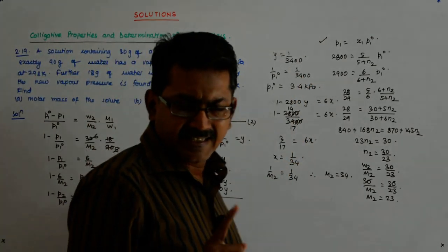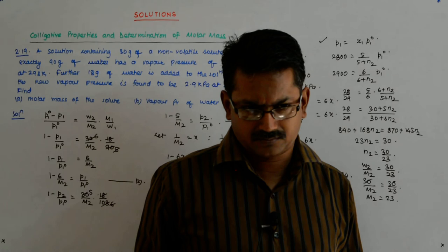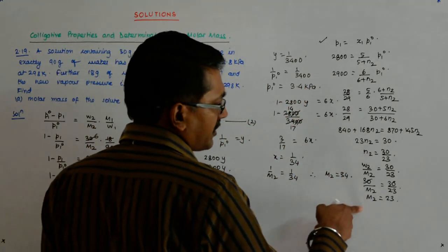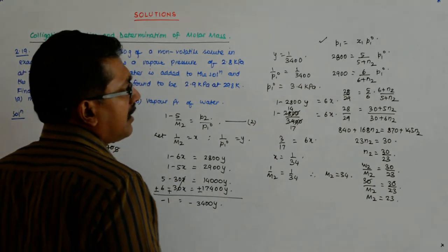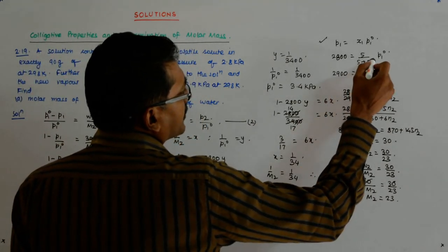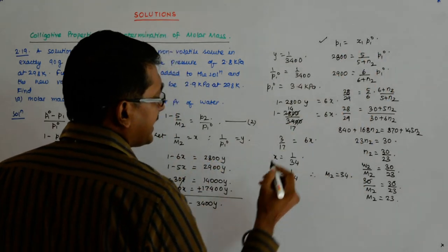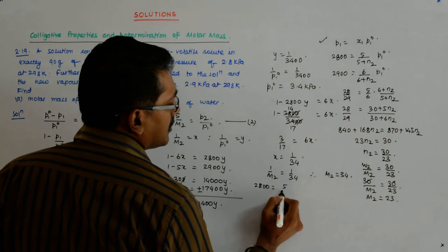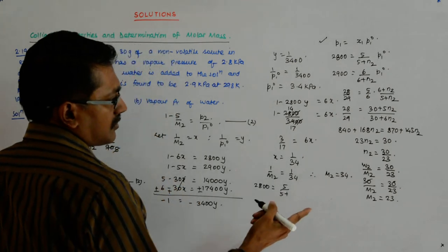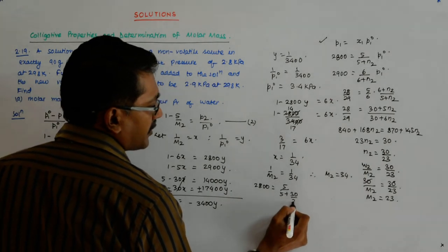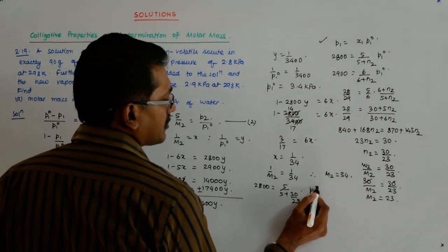So that is the exact equation, okay? That is the exact equation. So m2 is equal to 23 and the moment you put that here in any, so it gives you 2800 is equal to 5 upon 5 plus, what is that value? n2 is 30 by 23, 30 upon 23 into P1_0.